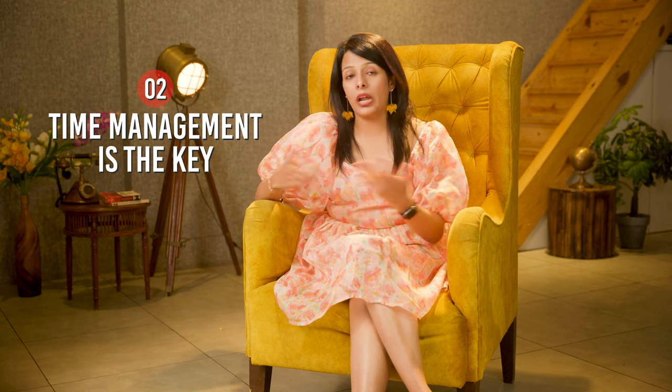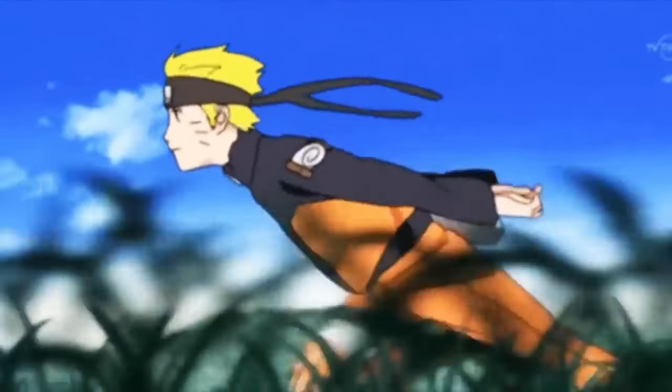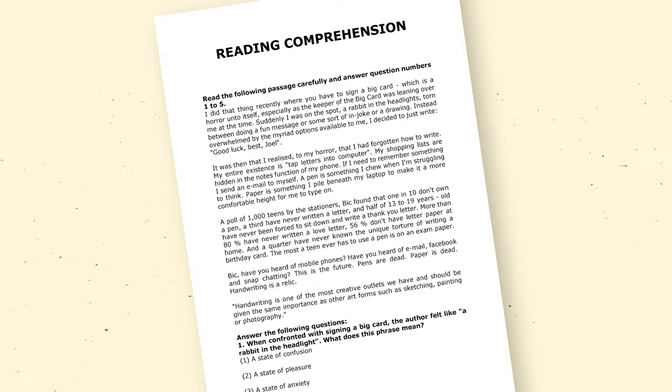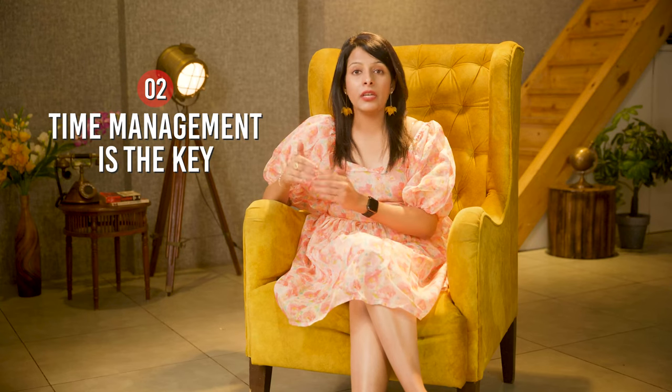Moving on to point number two: time management. Many students take more time than they should on the first 10–15 questions. After spending too much time on those, they realize they are racing against the clock and rush the rest of the paper — giving rise to the very silly mistakes just mentioned. A significant time drain is reading comprehensions, where you read line by line, go to the questions, then come back to the passage only to find you've forgotten it entirely. These time management mistakes cause silly mistakes, incomplete papers, or no time left to revise.